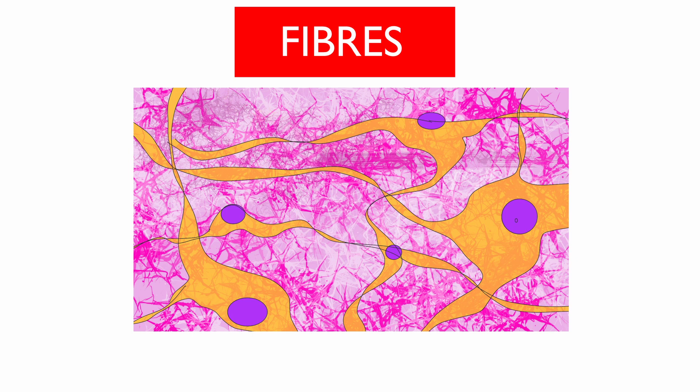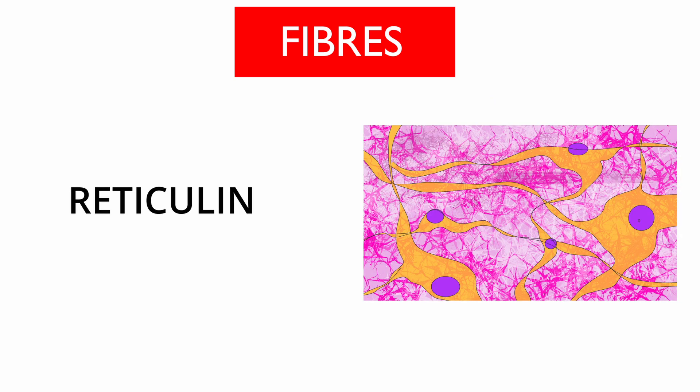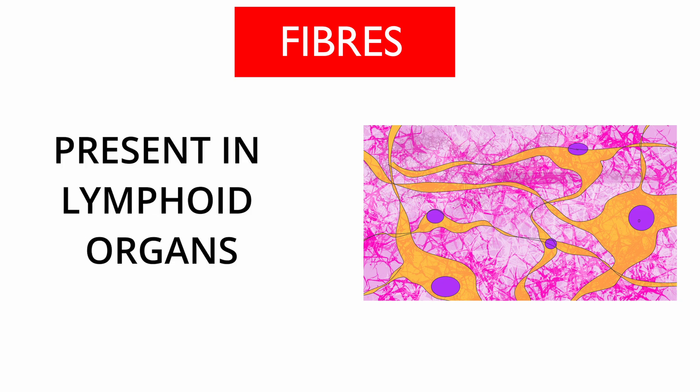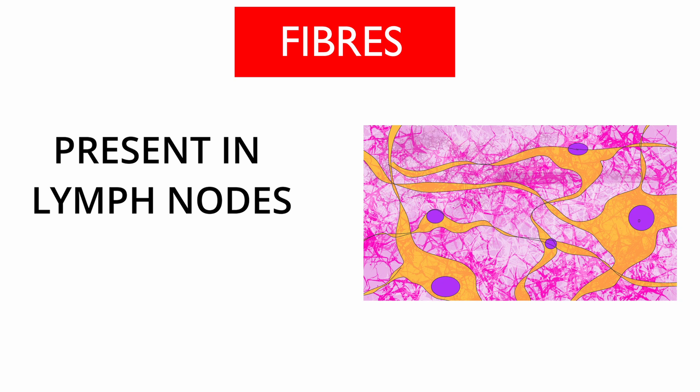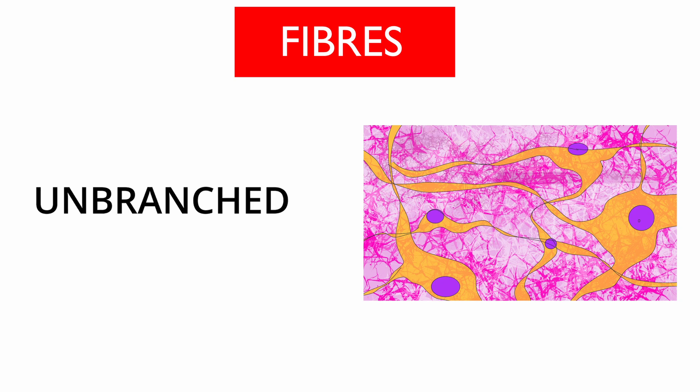Reticulate fibers are delicate fibers present where there is a need for movement. They are made of the protein reticulin and are mainly present in lymphoid organs, spleen, or lymph nodes. Lastly, they are unbranched and found singularly.